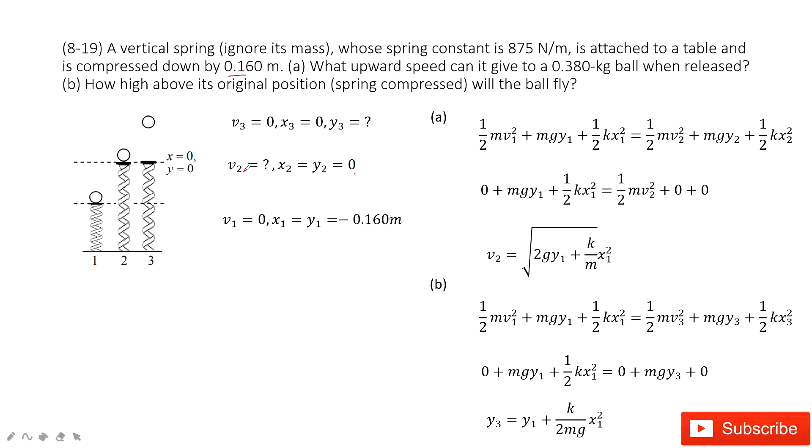At position two, we can write the kinetic energy, gravity potential energy, and elastic potential energy in the right hand side of the equation. Now input the known quantities. So only this term, this term, and this term survive. So we can solve the equation v2 in this function.